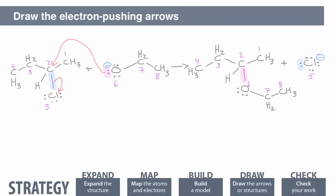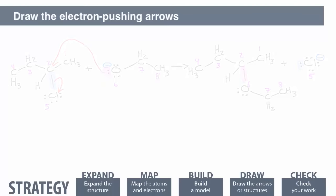Finally, check your work. You should have one arrow for each pair of electrons involved in that step of the mechanism.